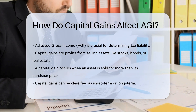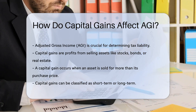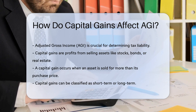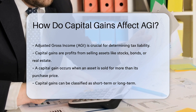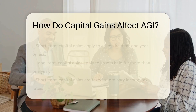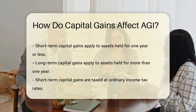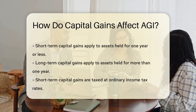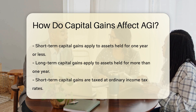When you sell an asset for more than its purchase price, the profit is considered a capital gain. These gains can be short-term or long-term, depending on how long you hold the asset. Short-term capital gains apply to assets held for one year or less. Long-term capital gains apply to assets held for more than one year.